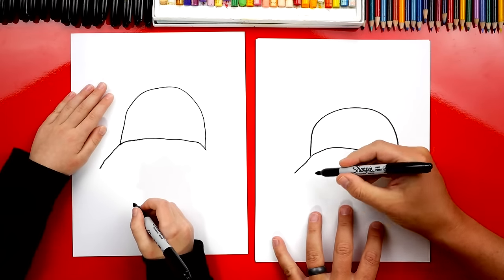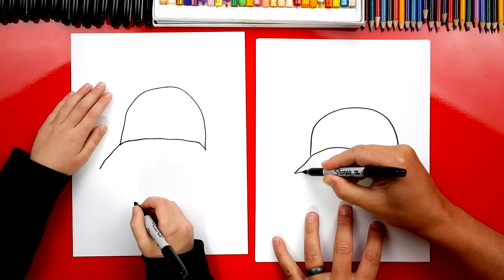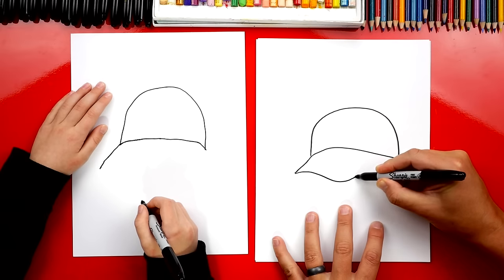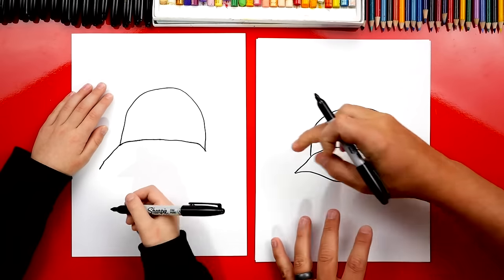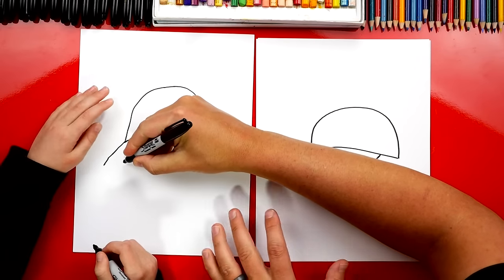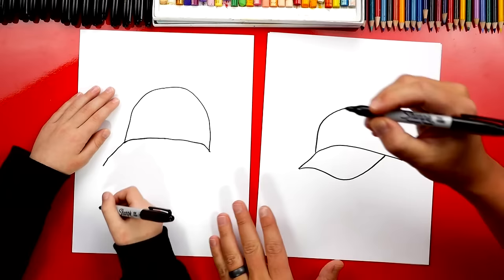Now we're gonna start right here and we're gonna draw a big S line. We're gonna draw a curve. It curves down like this and then we're gonna curve back into the hat. See how it's an S curve. We're gonna go up a little bit, back down, and then into the hat.